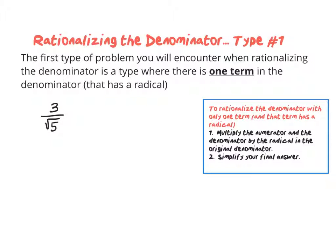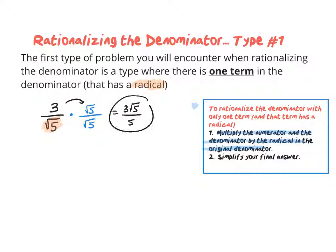There are two main types of rationalizing denominator problems. The first type is when there's only one term in the denominator, and that term has a radical. When we have just one single square root in the denominator, we multiply the numerator and the denominator by whatever radical is in the denominator. Since this denominator has a square root of 5, I multiply top and bottom by root 5. On top, 3 times root 5 is 3 root 5. On the bottom, root 5 times root 5 is 5. And we are done.